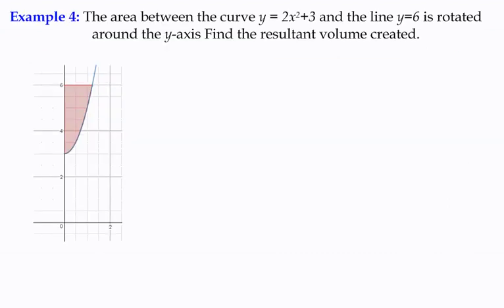Let's have a look at example 4. The area between the curve y equals 2x squared plus 3, and the line y equals 6 is rotated around the y-axis to find the resultant volume. So we've got our function here. There only is one line, y equals 6,